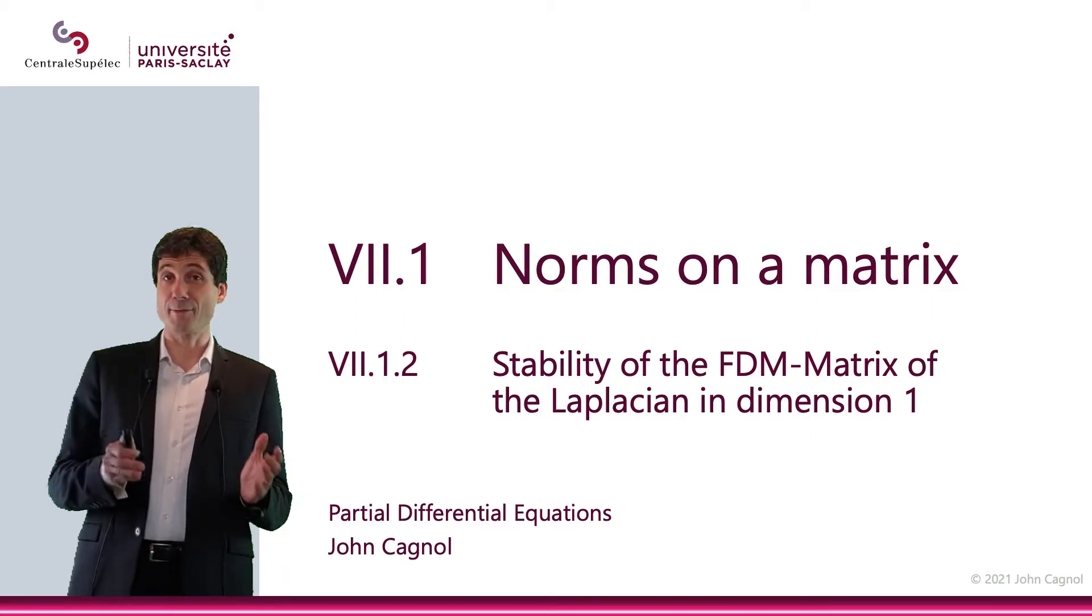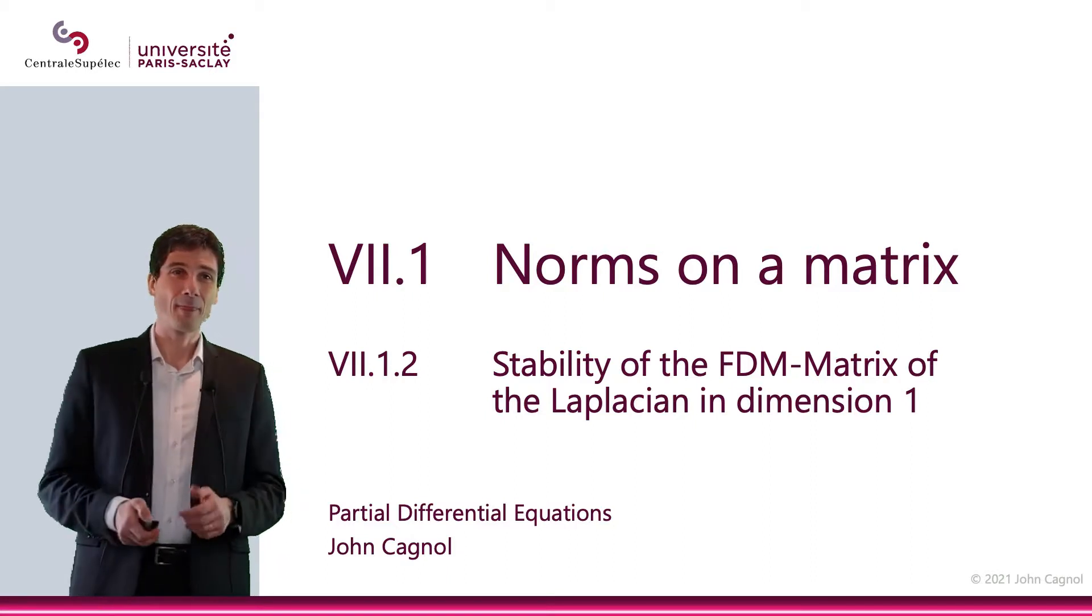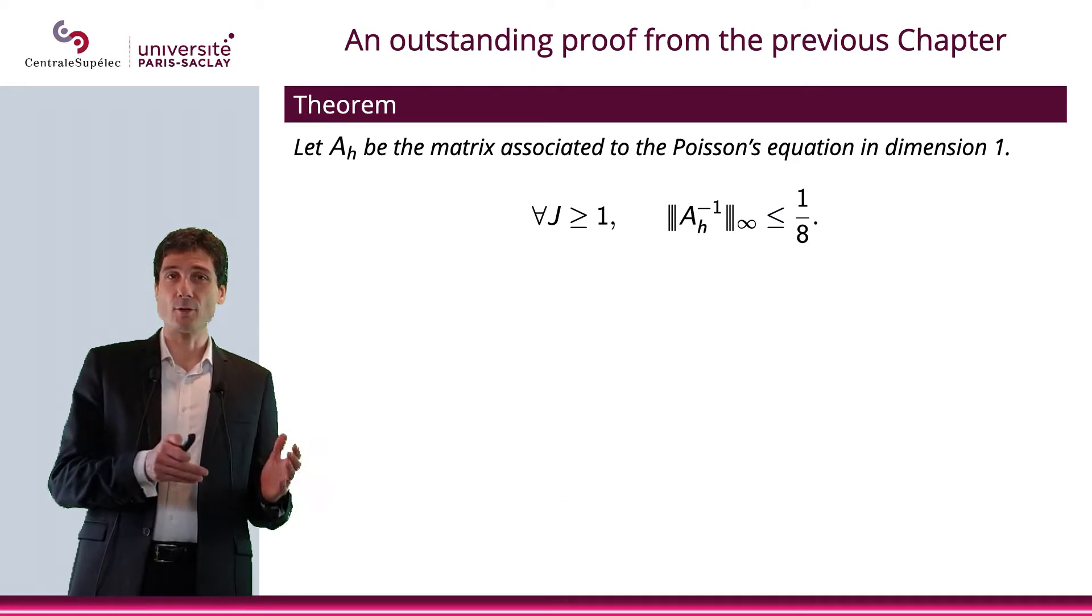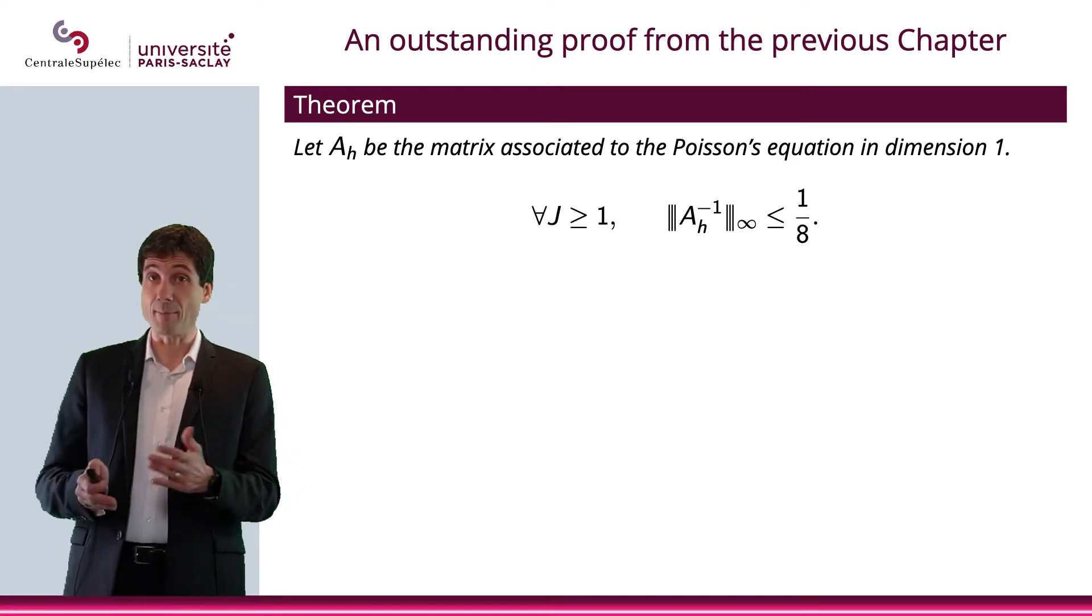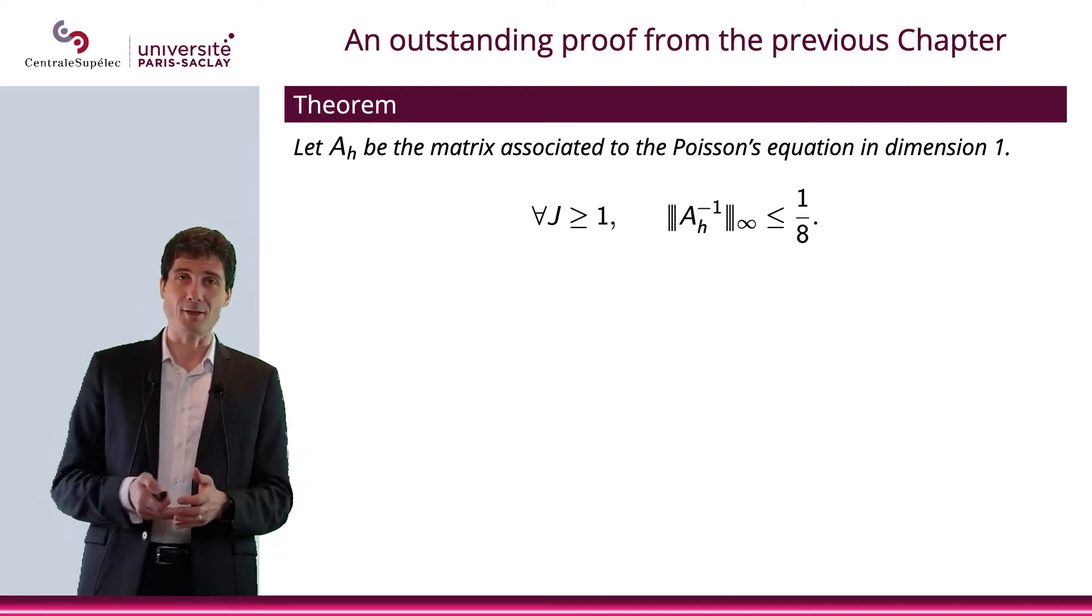In the previous chapter, there was a proof we didn't do. We're going to do it now. Remember when we looked at the stability of the finite difference method in dimension one for the Laplace operator, or basically the second derivative?